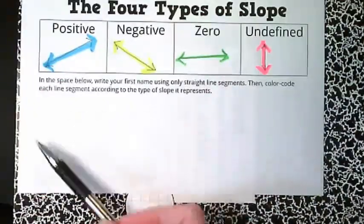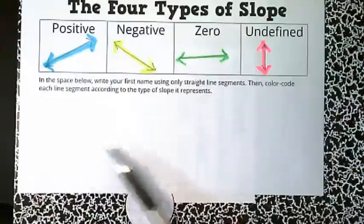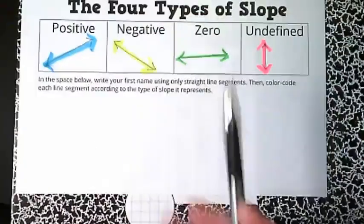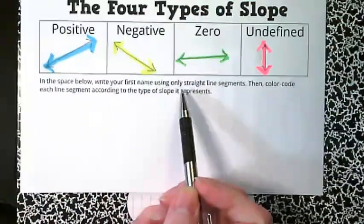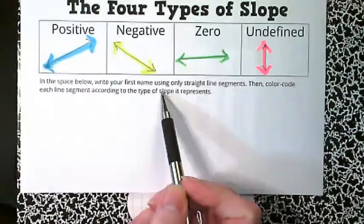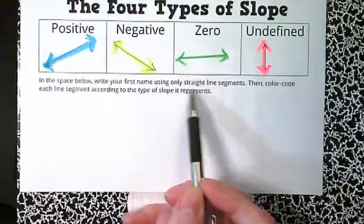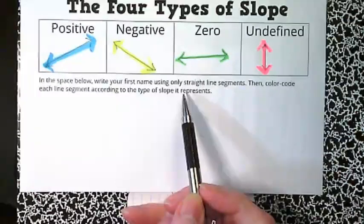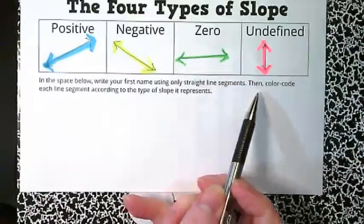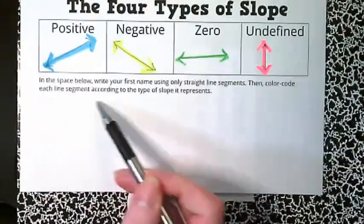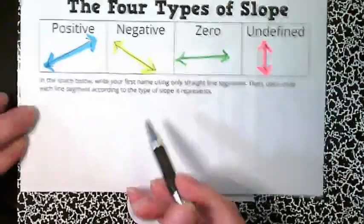When your color coding is done, you're going to use this space below to do a little bit of math art. You're going to write your first name using only straight line segments, so we're not writing like we normally write. Then we're going to color each segment according to the type of slope it represents.